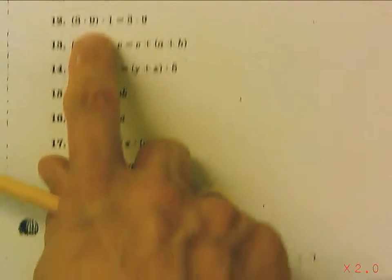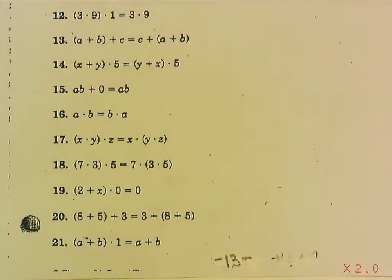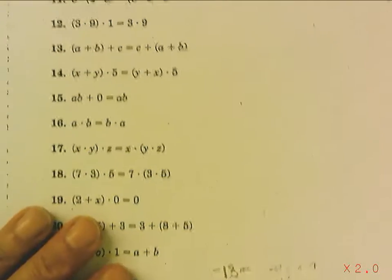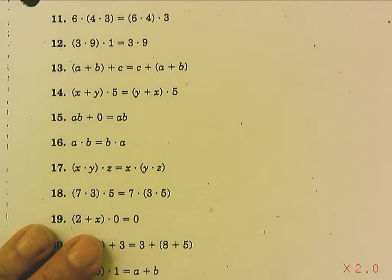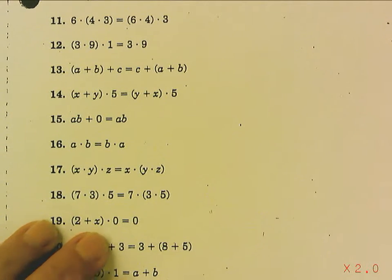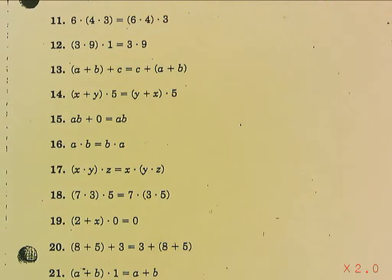And number 12, we're multiplying by 1. But when we multiply by 1, that's the identity property of multiplication. Because 3 times 9 times 1 is still 3 times 9.